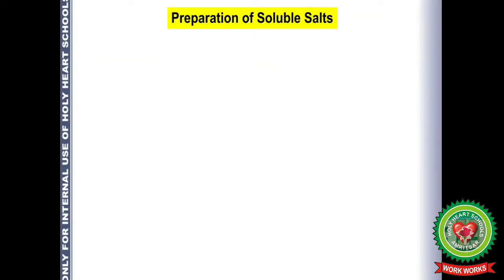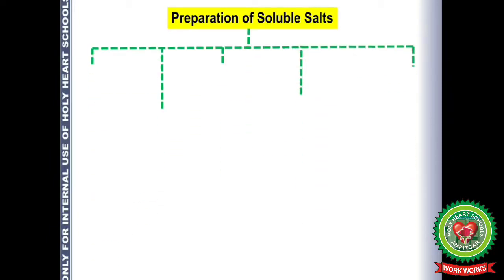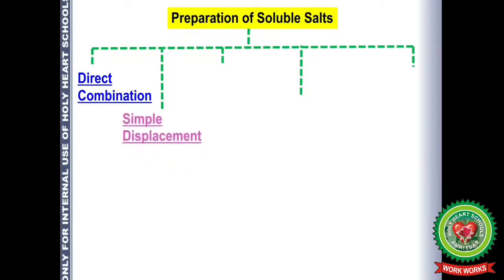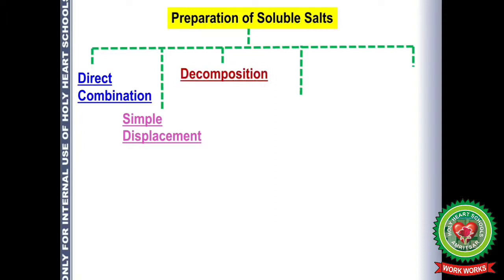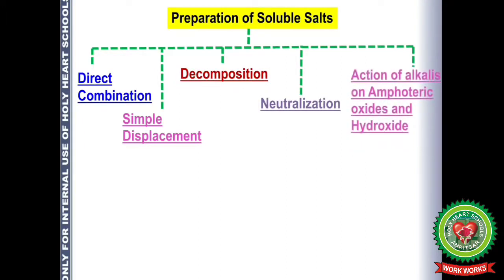Let's start with the first topic: preparation of soluble salts. The methods by which we can prepare soluble salts are: first, direct combination; second, simple displacement; third, decomposition; fourth, neutralization; and fifth, action of alkalis on amphoteric oxides and hydroxides.